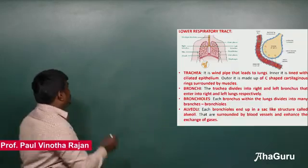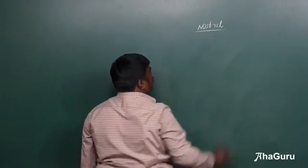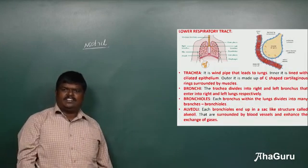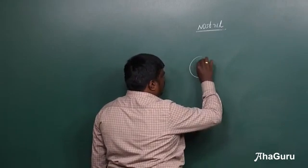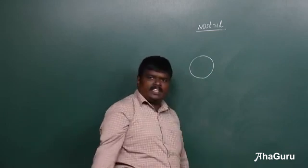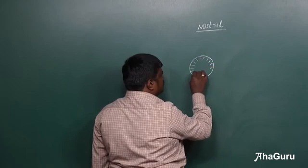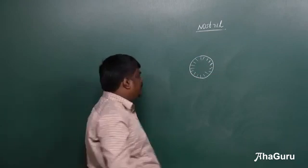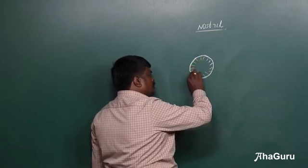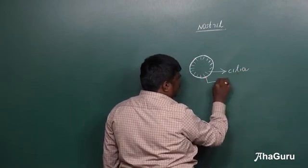The respiratory system in humans starts with the nostril. The term nostril means the external opening present in the nose. There are two nostrils, and within the nostril there are tiny hair-like structures called cilia, along with a mucus layer inside.